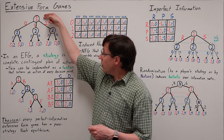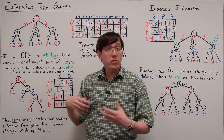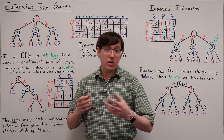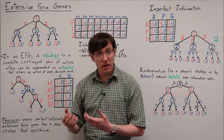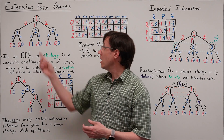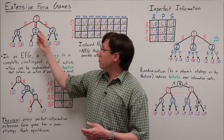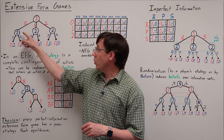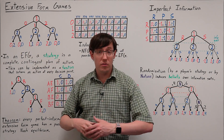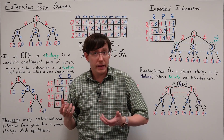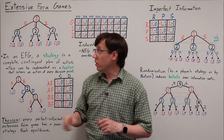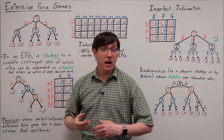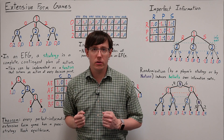We'll label the node with the player who is making a decision at that point, and then the actions available to a player when they're making their decision will result in branches of the tree. Those branches may lead to other decision nodes of various players in the game, or they may lead to an outcome where, as usual, we will have a payoff for each of the players.